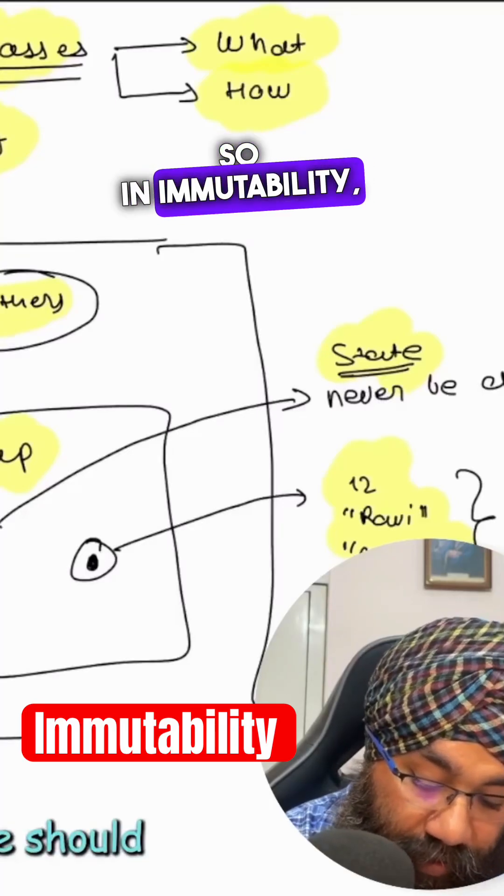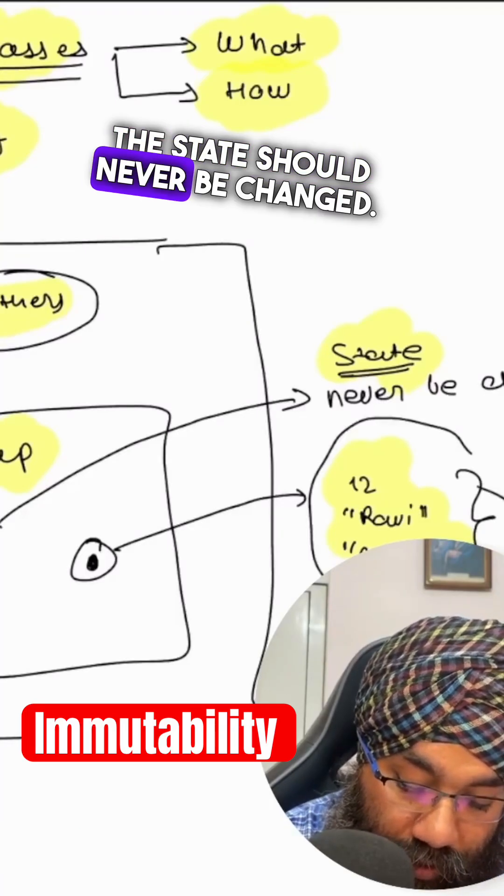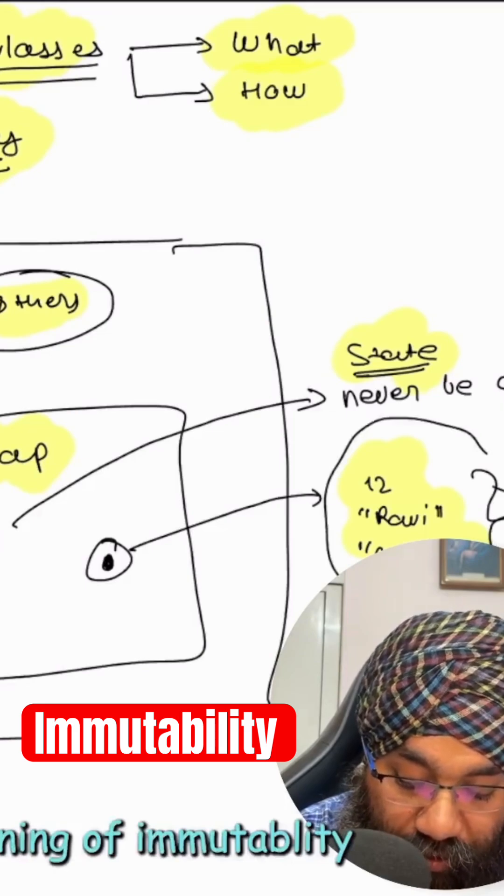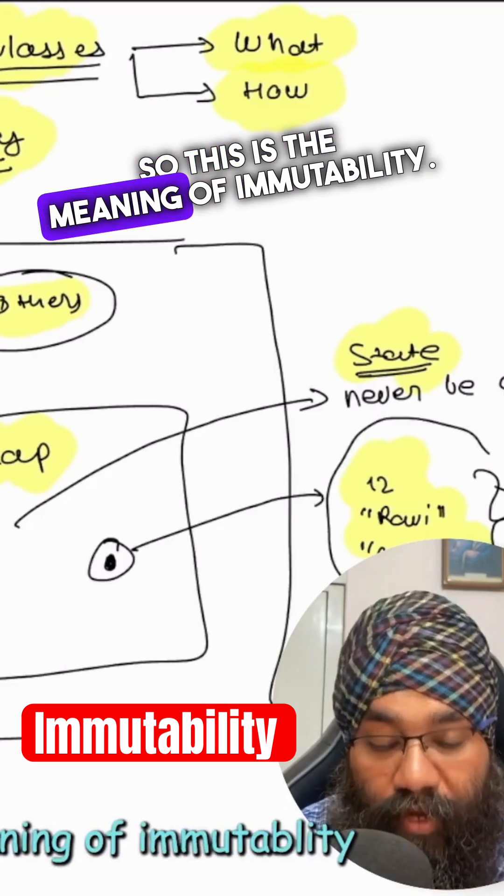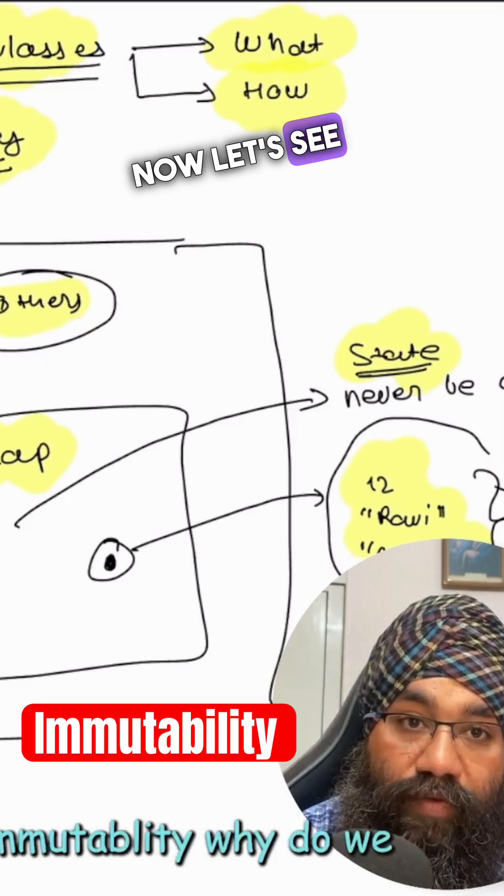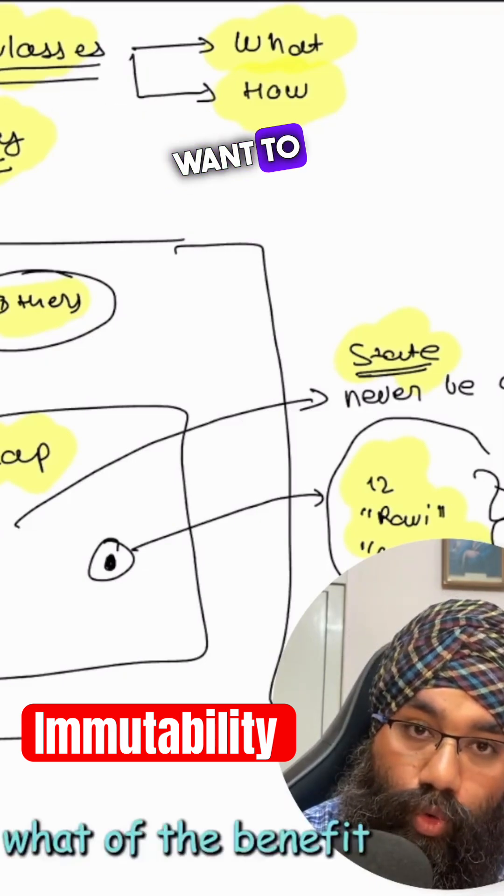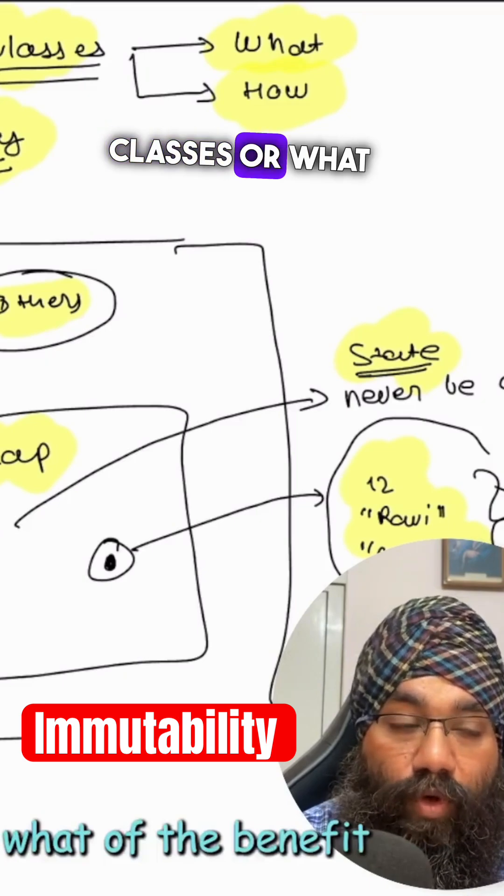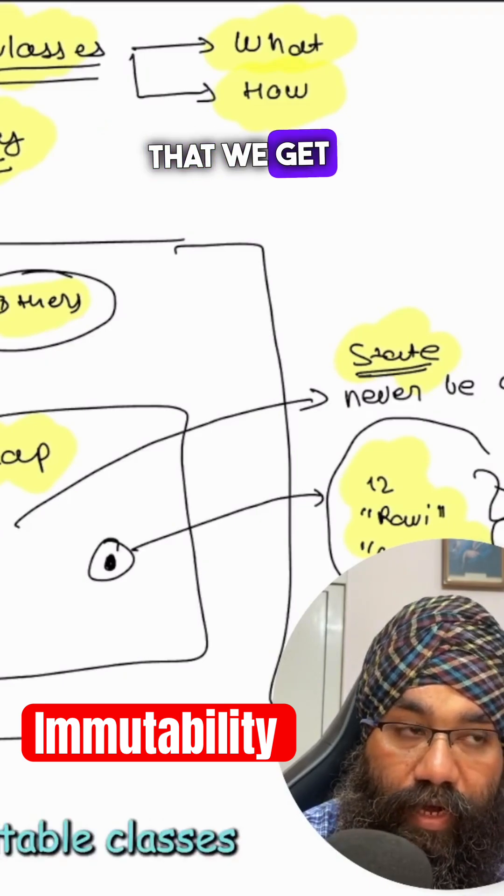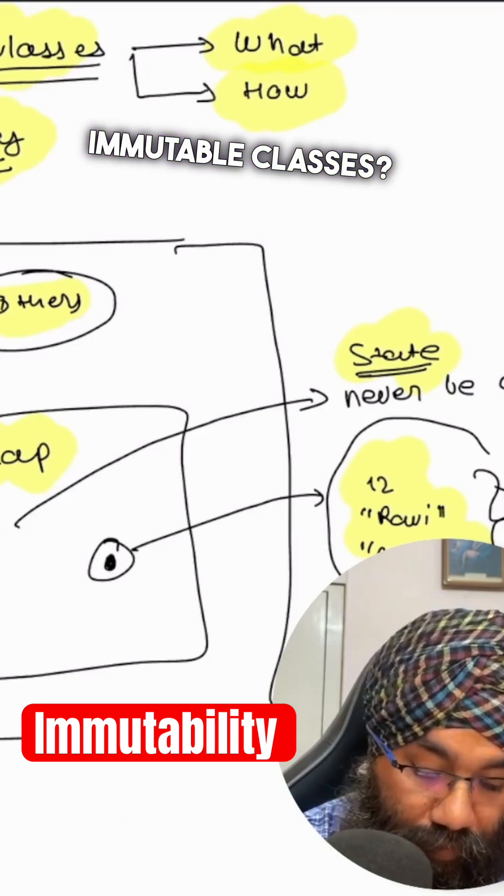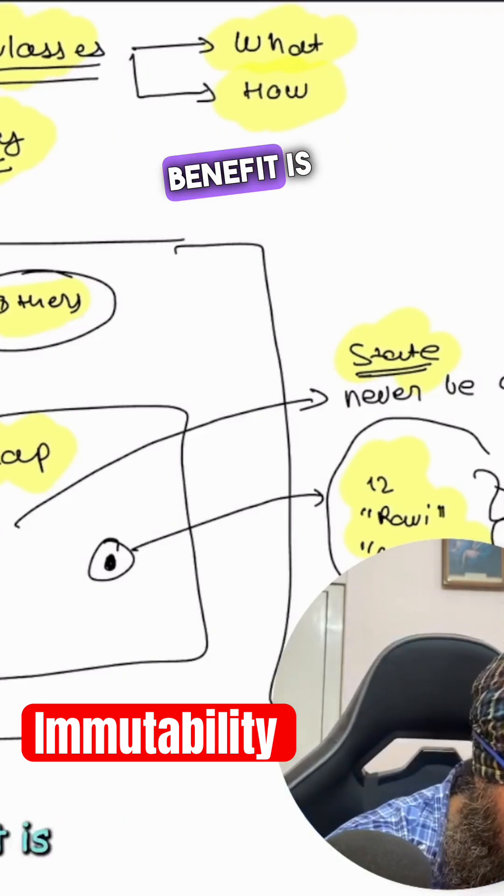In immutability, the state should never be changed. This is the meaning of immutability. Now let's see what is the benefit of immutability. Why do we want to create immutable classes, or what is the benefit that we get by creating immutable classes? The first benefit is thread safety.